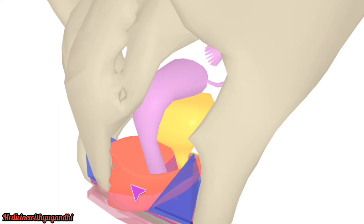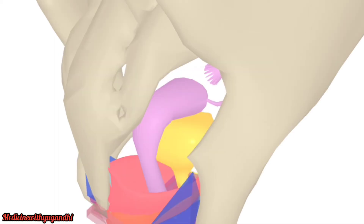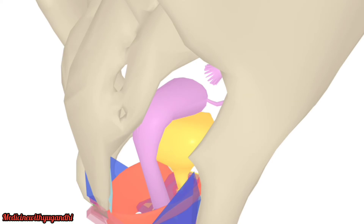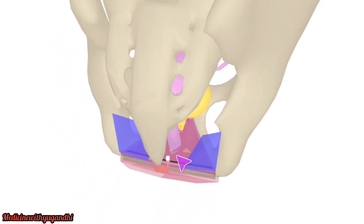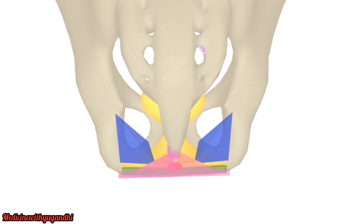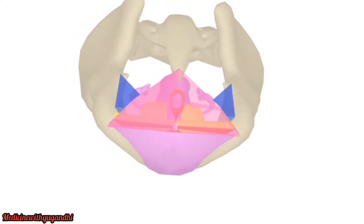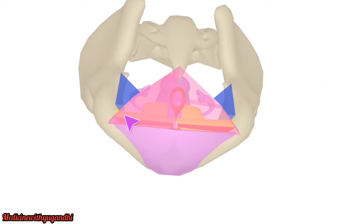Below the pubococcygeus you can see the puborectalis muscle. Removing both of those, below that you can see the deep perineal pouch. Removing that further, you can notice the perineal membrane — the yellow-colored structure visible here.